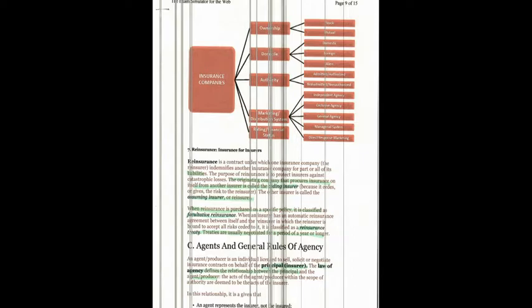Any knowledge of the agent is presumed to be knowledge of the insurer. If the agent is working within the conditions of their contract, the insurer is fully responsible. When the insured submits payment to the agent, it is as if submitting payment to the insurer. The agent is responsible for accurately completing the application for insurance, submitting it to the insurer for underwriting, and delivering the policy to the policy owner.